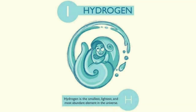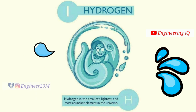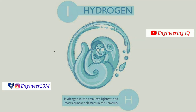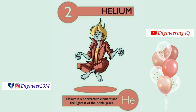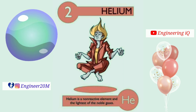Hydrogen: atomic number of hydrogen is 1. Hydrogen is the smallest, lightest, and most abundant element in the universe. It is denoted by H. Helium: atomic number of helium is 2. Helium is the non-reactive element and the lightest of the noble gases.